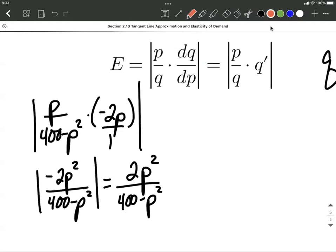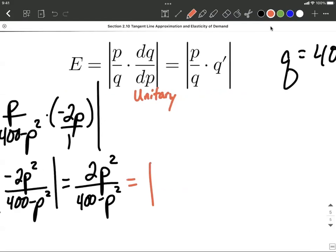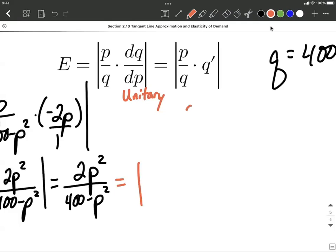Remember our magic number, 1. What we want to figure out is when is this what we refer to as unitary. Unitary would be when our elasticity of demand E is equal to 1. So let's work on solving this down. First thing I do is multiply both sides of this equation by that denominator, since we have p in the denominator and can't solve for p while it's there. So that's going to get us to 2p squared equals 400 minus p squared.